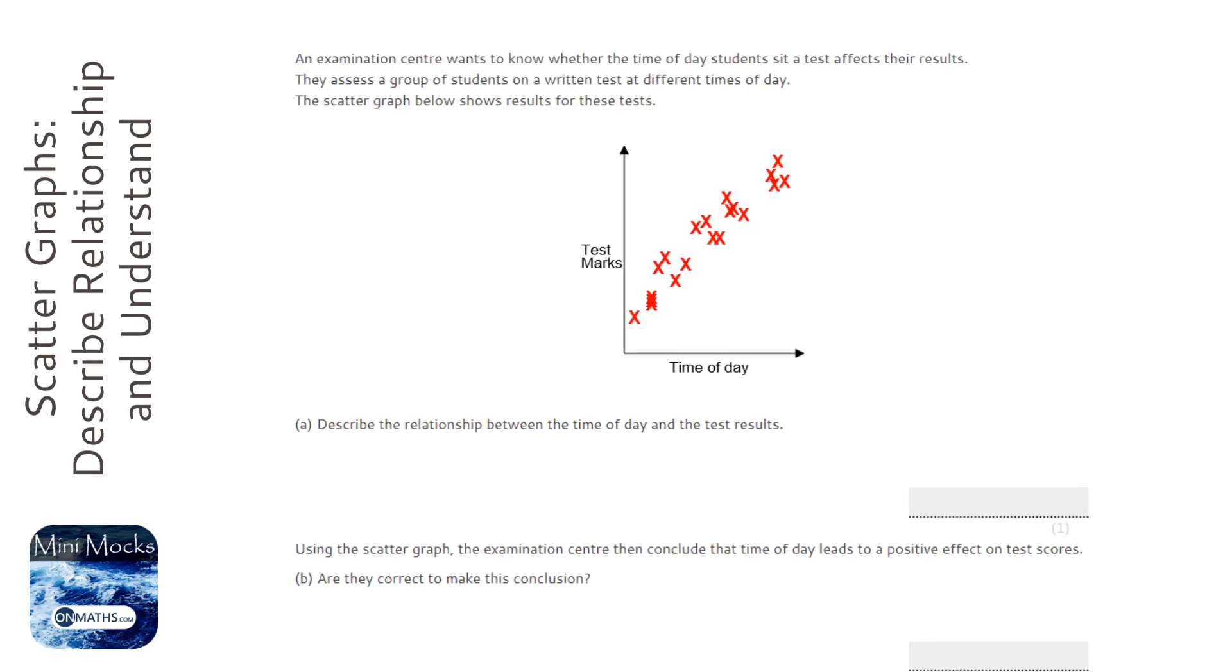When you're asked to describe the relationship between two things on a scatter graph, the sentence you need to write is 'as this one increases, this one either increases or decreases.' So as time of day increases...